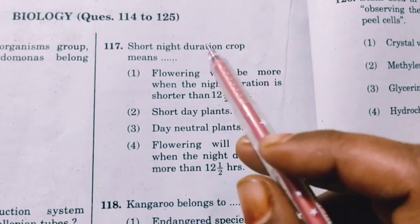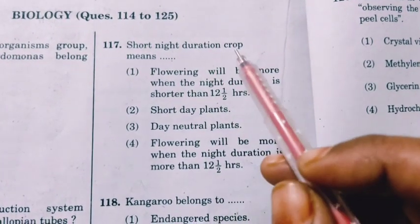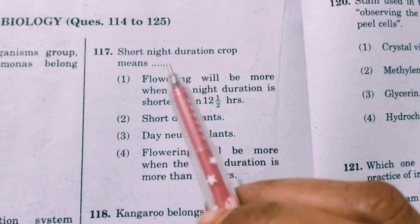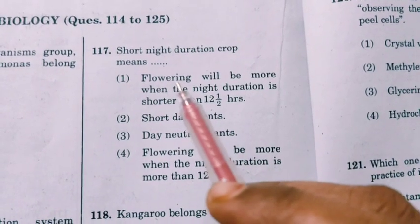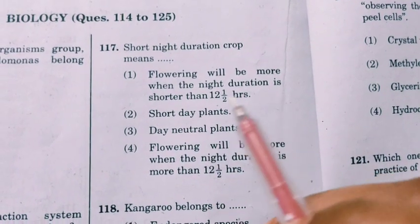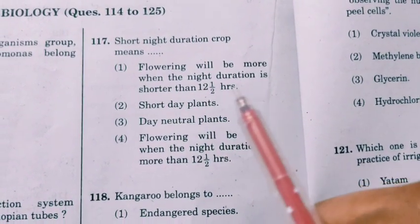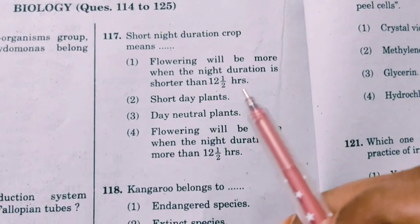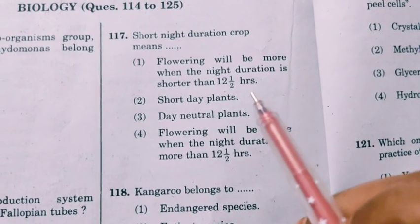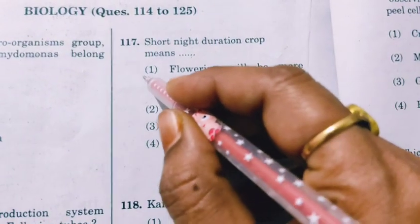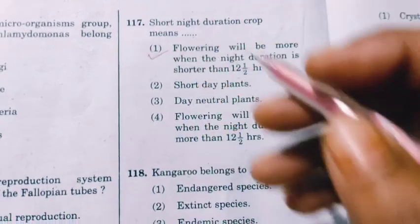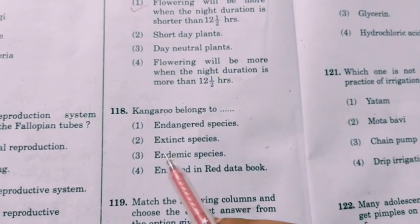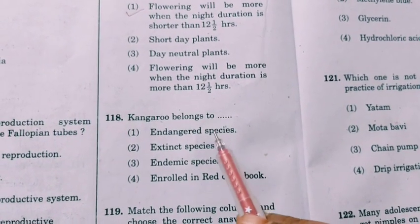Short night duration crop means flowering will occur more when the night duration is shorter than 12 and a half hours. This is what defines a short night duration crop.